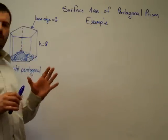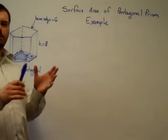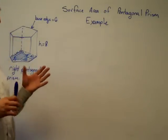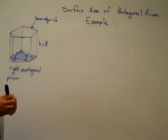Now, this same method would work for hexagonal, octagonal, it doesn't matter what the base is, trapezoidal prisms. Basically, you're going to find the area of the two bases and add it to the area of all the lateral faces.